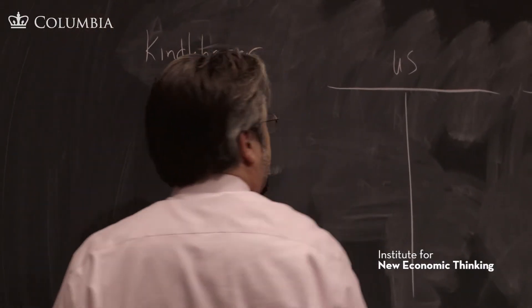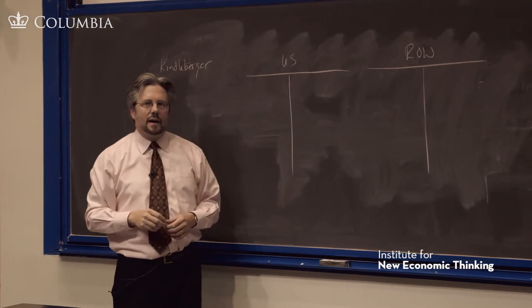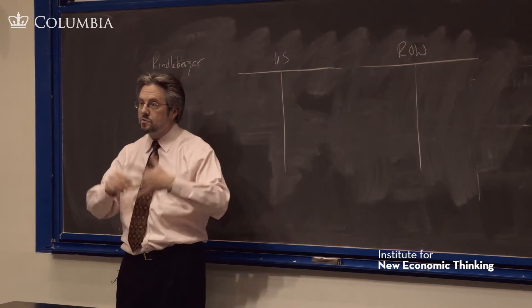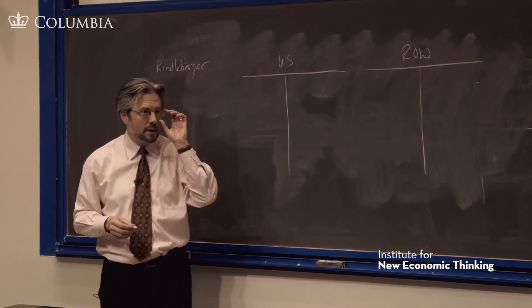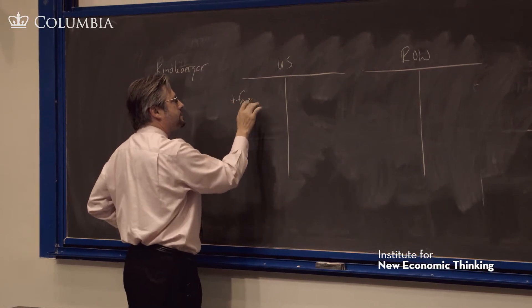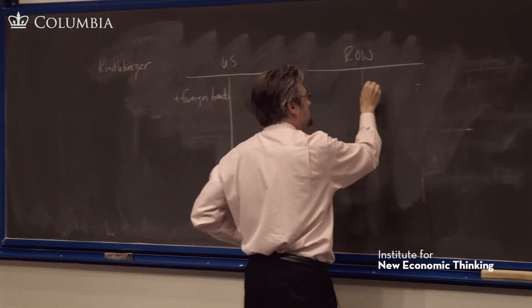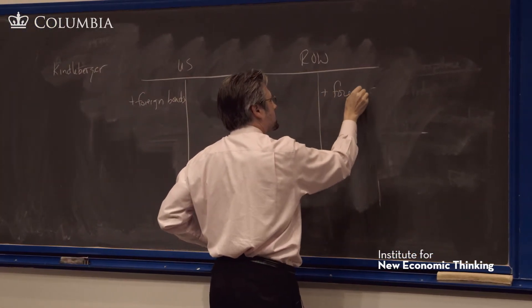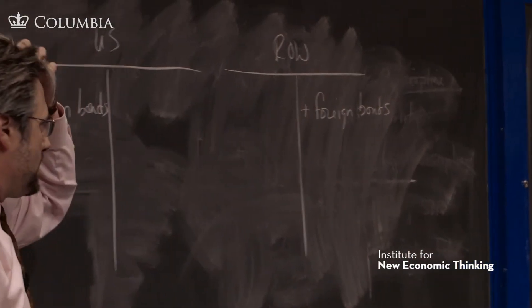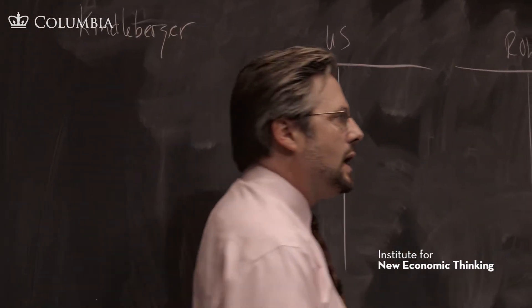Kindleberger, who was Mundell's professor at MIT, Charles Kindleberger - suppose the US lends to the rest of the world. They're trying to build, you know, Europe is trying to reconstruct itself, and the US finances that by buying foreign bonds. At the same time, the rest of the world is trying to accumulate monetary reserves because they're trying to grow.